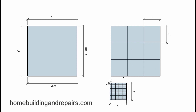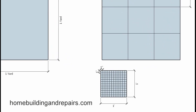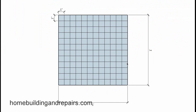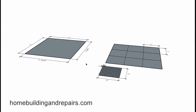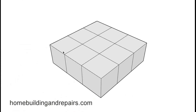If we take one square foot and break it down into inches, we have 12 inches on each side. 12 times 12 gives us 144 — there are 144 square inches in one square foot. And remember, that's on a single plane, not a three-dimensional object.